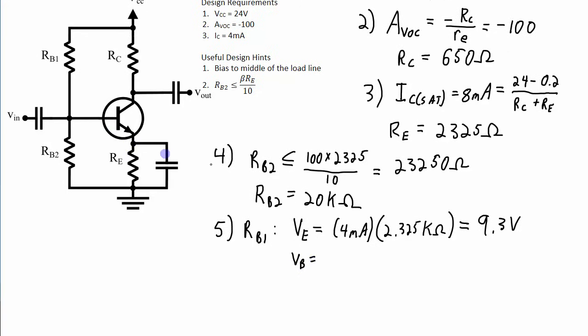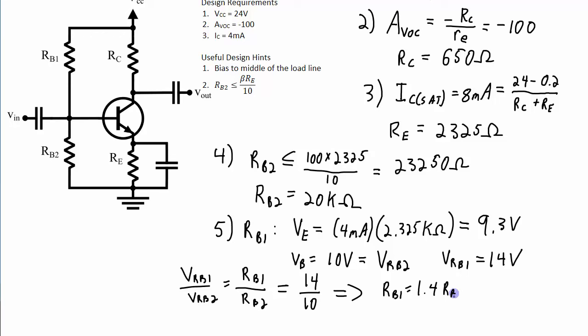Since VB is simply the diode drop more than VE, 0.7 volts more than the 9.3, so VB will be 10 volts. That is the same as the voltage across RB2. If I have 10 volts here I am going to have to have 14 volts here to get my VCC of 24 volts. So the voltage across RB1 is 14 volts. The 24 volts get split as 14 and 10, so that ratio of 14 to 10 for voltage has to be the same ratio for the resistance of RB1 to RB2. That ratio is 14 to 10. Rearranging that equation I get RB1 is equal to 1.4 times RB2. I have picked RB2 of 20 kilo ohms, so that means my RB1 needs to be equal to 28 kilo ohms.